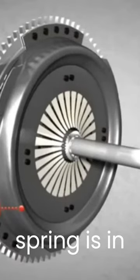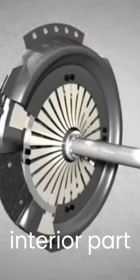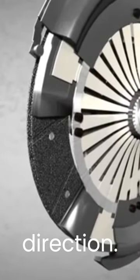When the diaphragm spring pushes the release bearing into the spring, the spring's interior part is moved in the clutch's direction.